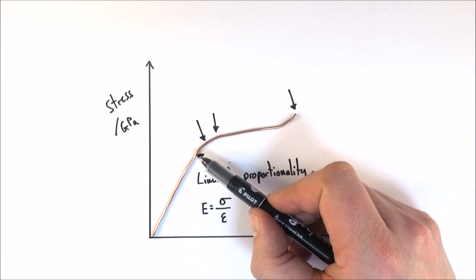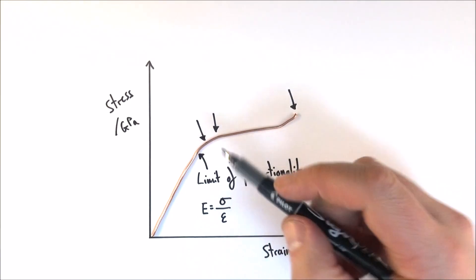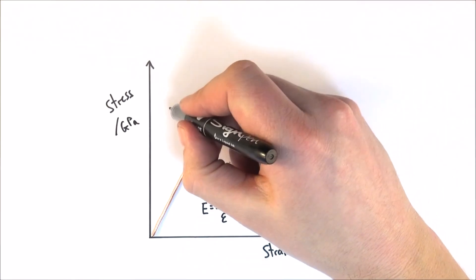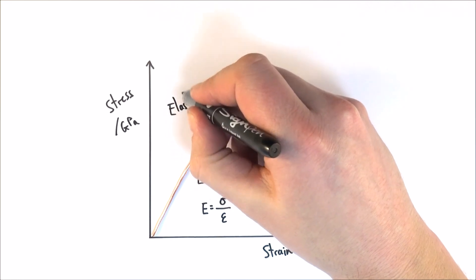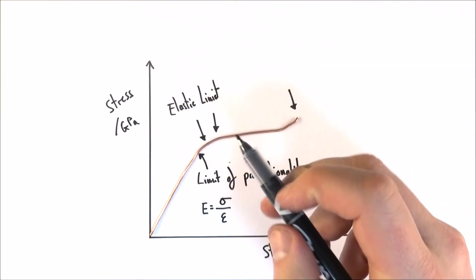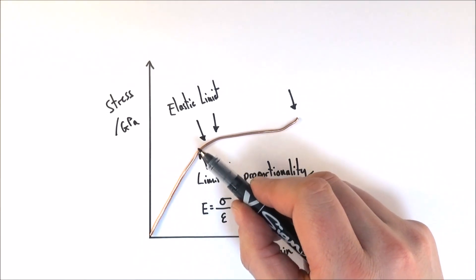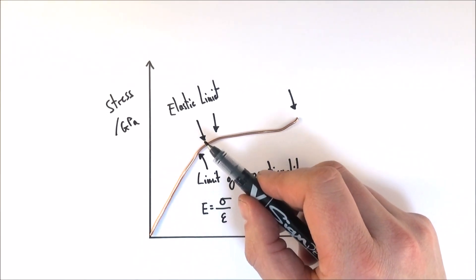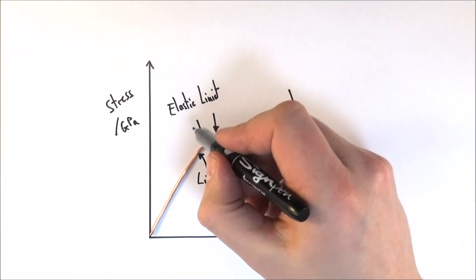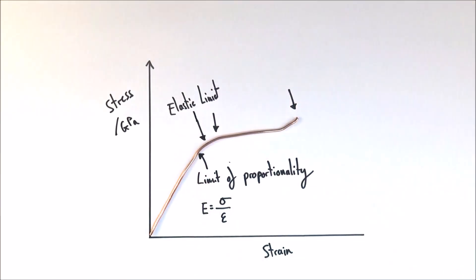But there's a point here where we then start to go into some elastic behavior, and this point up here is what we call the elastic limit. So that means the material can basically move up to its elastic limit—it doesn't behave proportionally up here—but if you take that load away, it then returns to its original length.